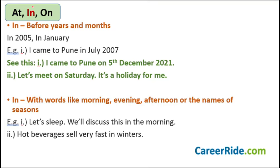Now let's move on to our next word, which is 'in.' We use this preposition 'in' before years and months. For example, 'in 2005' — 2005 is a year. 'In January' — January is the name of a month. So we say 'in 2005' and 'in January.' For example: 'I came to Pune in July 2007' — I'm directly writing the name of a month, July, so 'in' before it.